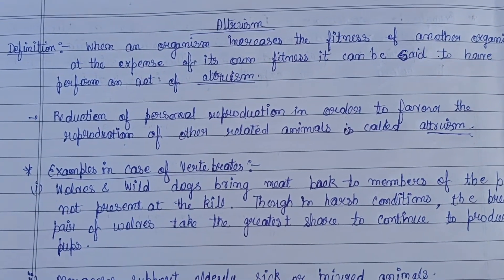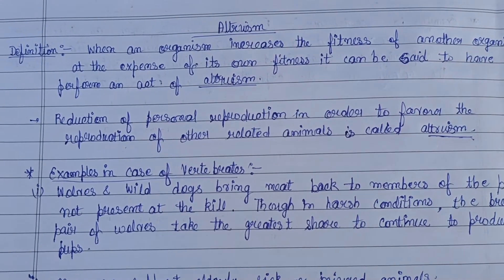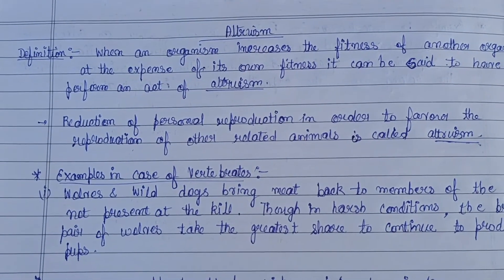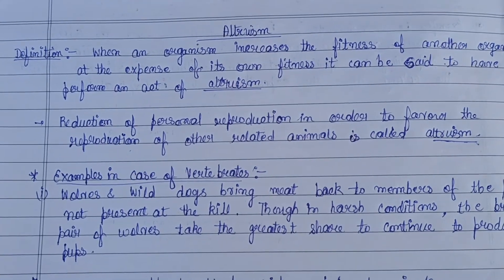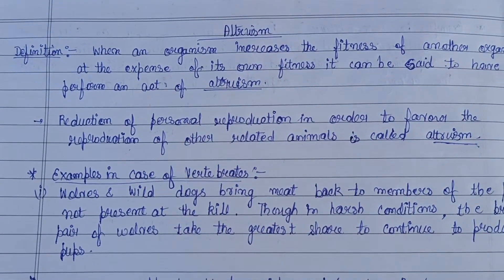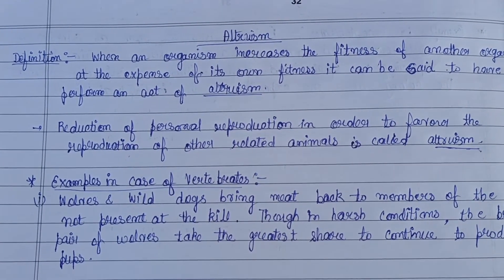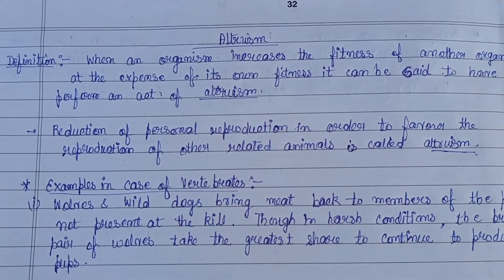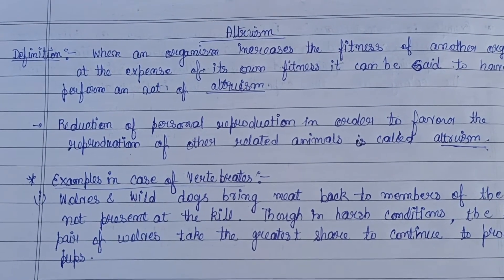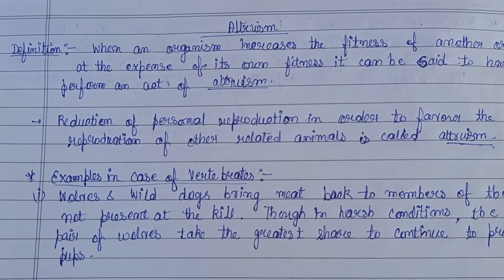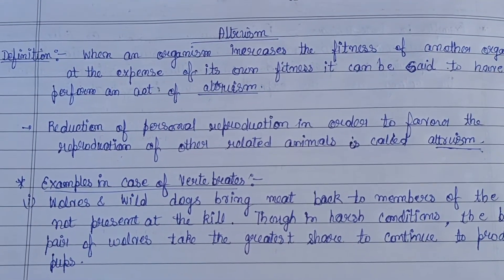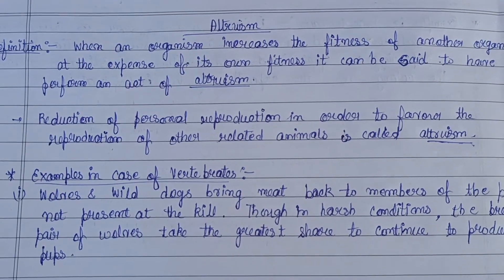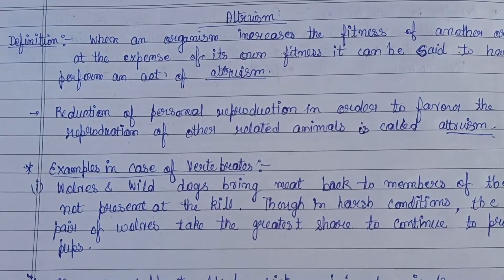If any organism decreases its own fitness and as a result another individual — called the recipient — has their fitness increased, we call that altruism. Under this concept, there are two types of individuals: the actor and the recipient. The actor's personal reproduction level is lowered, while the recipient's fitness is increased. Basically, altruism is a behavior by an individual that increases the fitness of another while decreasing the fitness of the actor.